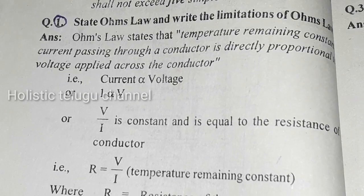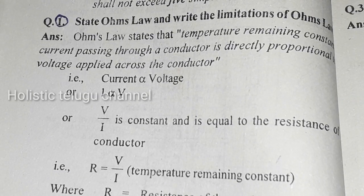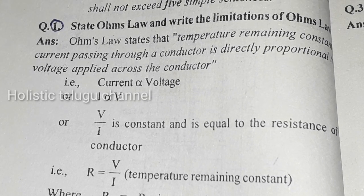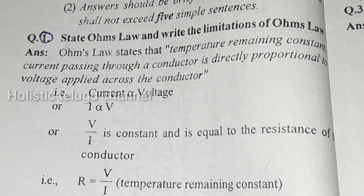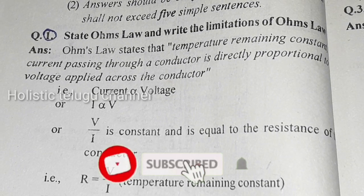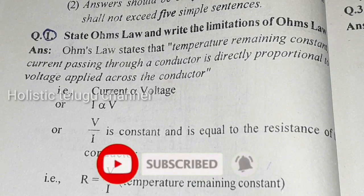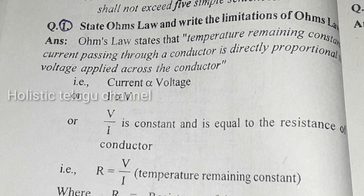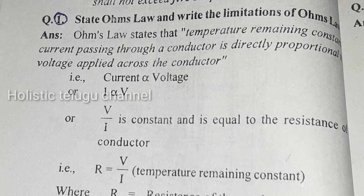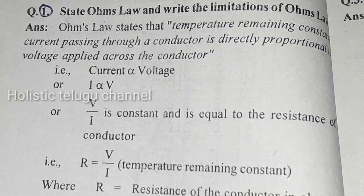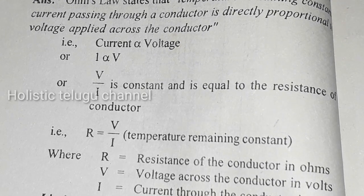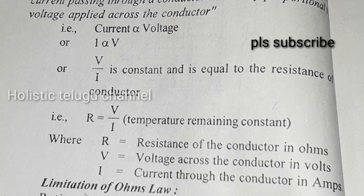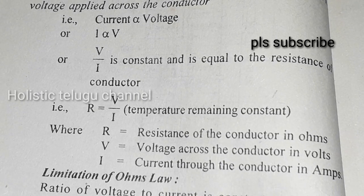Next question: state Ohm's law and write its limitations. Ohm's law states that, temperature remaining constant, the current passing through a conductor is directly proportional to the voltage applied across it. That is, current is proportional to V, or V divided by I is constant and equals the resistance R of the conductor. R equals V divided by I, where R is resistance in ohms and V is voltage across the conductor.